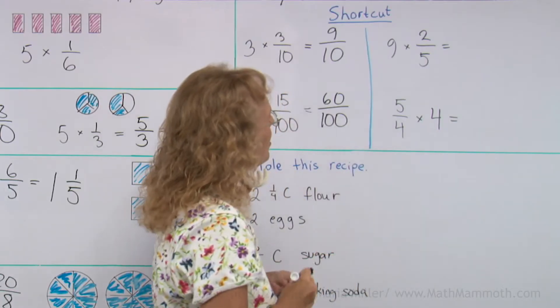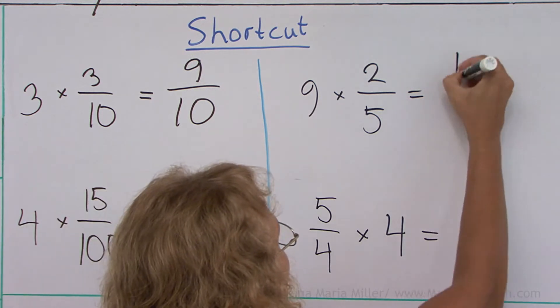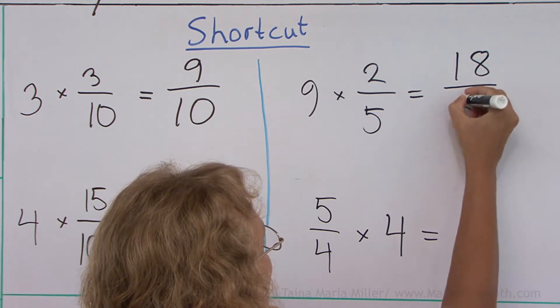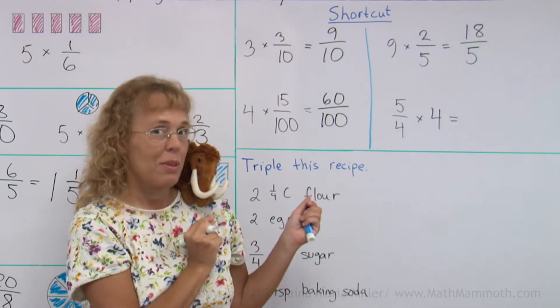And then 9 times 2 fifths. Okay, using our shortcut we go 9 times 2, 18. And that's how many fifths we have. But that's more than one whole. Can you change that into a mixed number, 18 fifths?